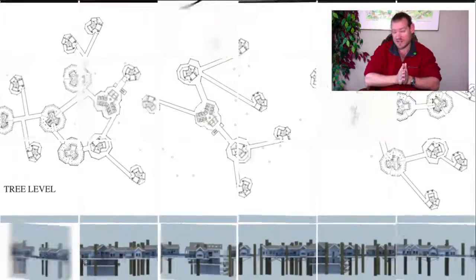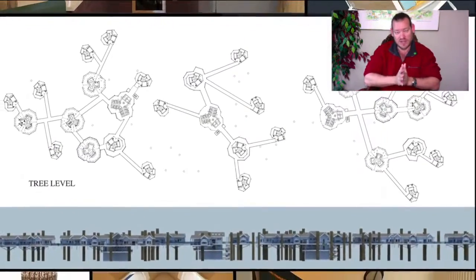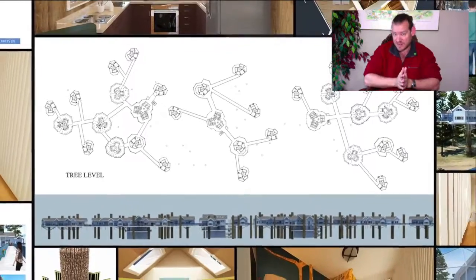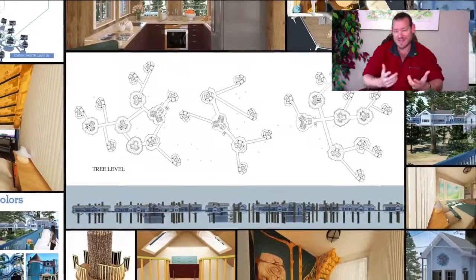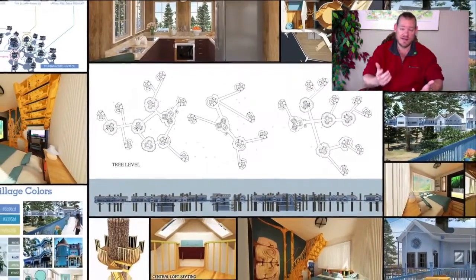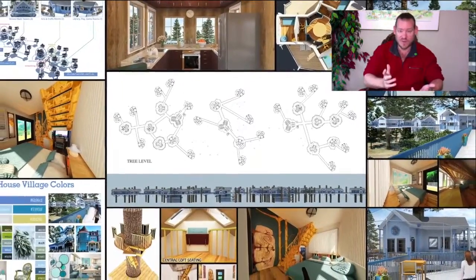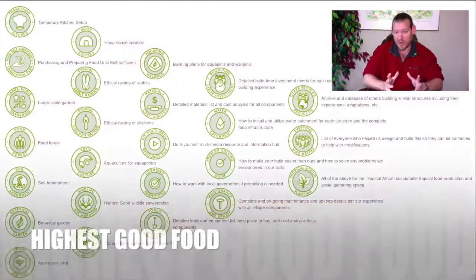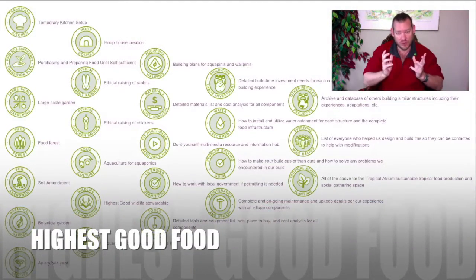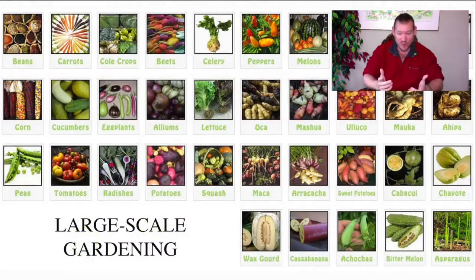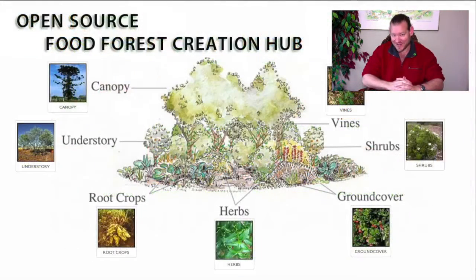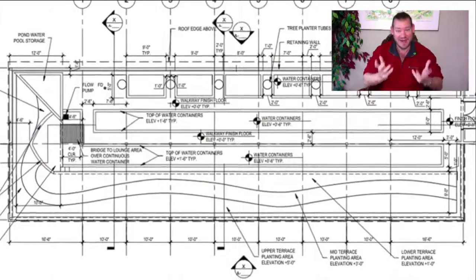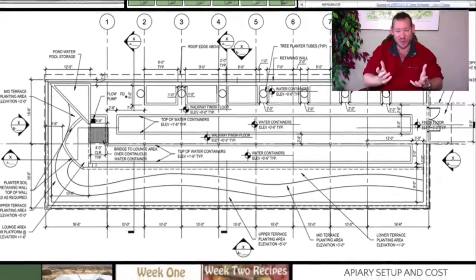We're creating all of this to streamline the process. One Community is a place people can visit from anywhere in the world, experience what we're creating, and if they like the open source community ecology model, they can replicate it wherever they want — anywhere around the world — and join a global collaborative of people working together for the highest good of all life on this planet.